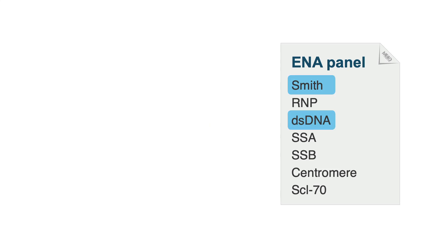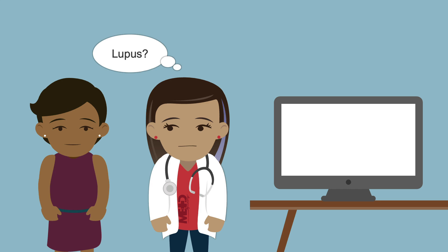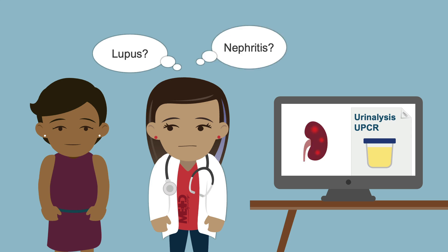Smith and dsDNA antibodies are almost 100% specific for lupus, meaning that their positivity should put lupus high in your differential diagnosis. Additional tests you should be checking in lupus include complement levels C3 and C4, a urinalysis, and a random urine protein to creatinine ratio, or UPCR. The reason for the urine studies is because nephritis is the most common organ affected in lupus, and it is a silent disease that should be screened routinely.